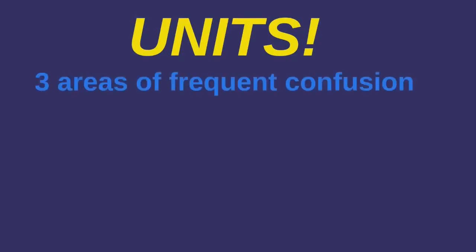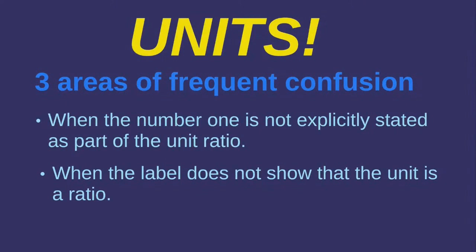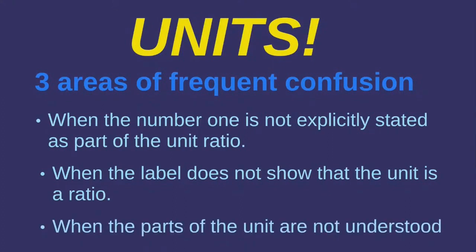When units are ratios, there are three areas of frequent confusion that arise. And I want to go through these quickly before we go any further. The first is when the number one is not explicitly stated as part of the unit ratio. We're going to take a look at an example of this with speed in just a minute. The second area of confusion is when the label of the unit does not show that it's a ratio. For example, watt, which seems like it's describing a single entity, but it's actually describing a rate of joules per second. The last area of confusion is when the parts of the unit are not understood. So even if you know that a watt is a joule per second, if you don't understand what a joule is, then it's virtually impossible to grasp the full meaning of a watt.